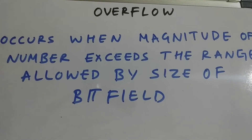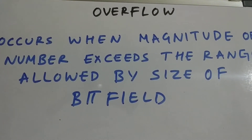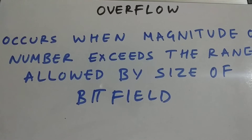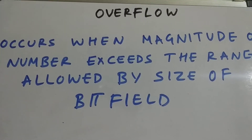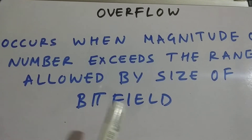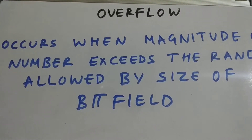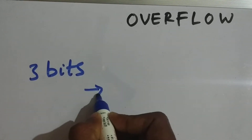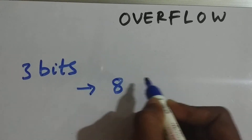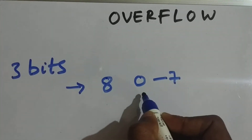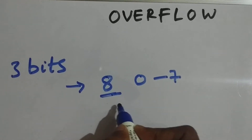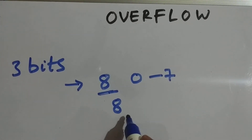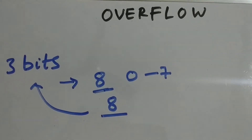As you can see, this is the definition of overflow. Overflow occurs when the magnitude of a number exceeds the range allowed by the size of its bit field. Let's take an example: if we have three bits, we can represent up to eight values, from zero to seven. If we want to represent eight in three bits, it's not possible — that means it's an overflow. This magnitude is not possible in a three-bit field.